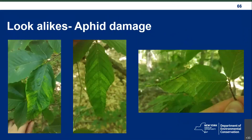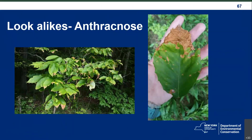Another look-alike is aphid damage, which has tripped me up in the woods a few times. You see discoloration that can make kind of stripes like beech leaf disease, but if you hold the leaves up to the light, it doesn't have that dark striping. Usually when you flip the leaves over, you'll see a tightly curled edge, which is a sign of the leaf-rolling aphid. The final look-alike is anthracnose, a fungal disease of beech that causes brown spots or more extensive browning. It can look like beech leaf disease from a distance, but up close there's no striping, and it doesn't have that same leathery texture.